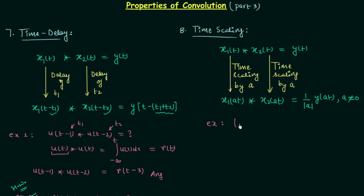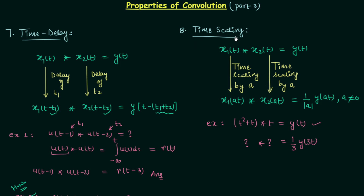In this example, we are convoluting (t² + t) with t, and it gives us y(t). According to the question, the result of the convolution is (1/3) · y(3t), and we are required to find the two signals which are convolved to give this result. To find the two convoluted signals we will use the time scaling property. Comparing (1/3) · y(3t) with the result, the amount by which we are performing the time scaling is equal to 3.